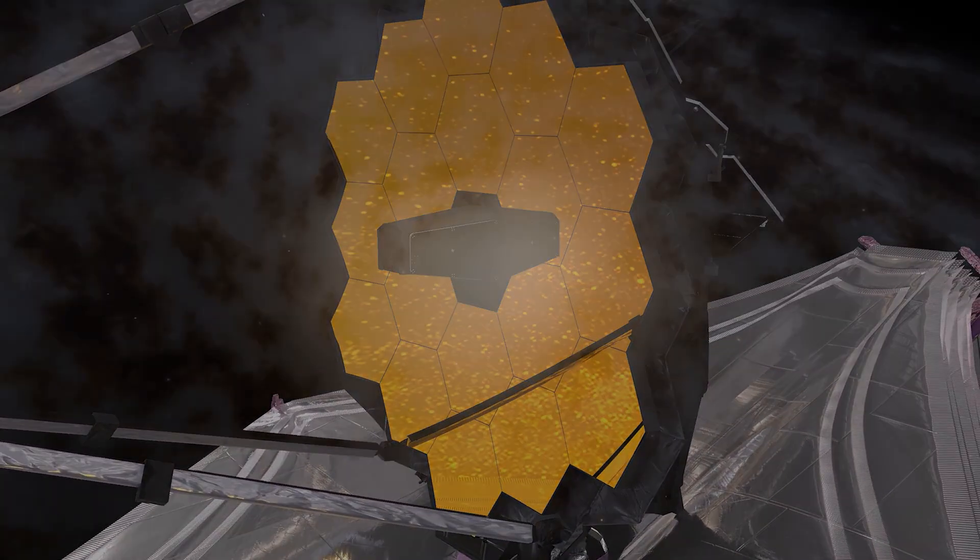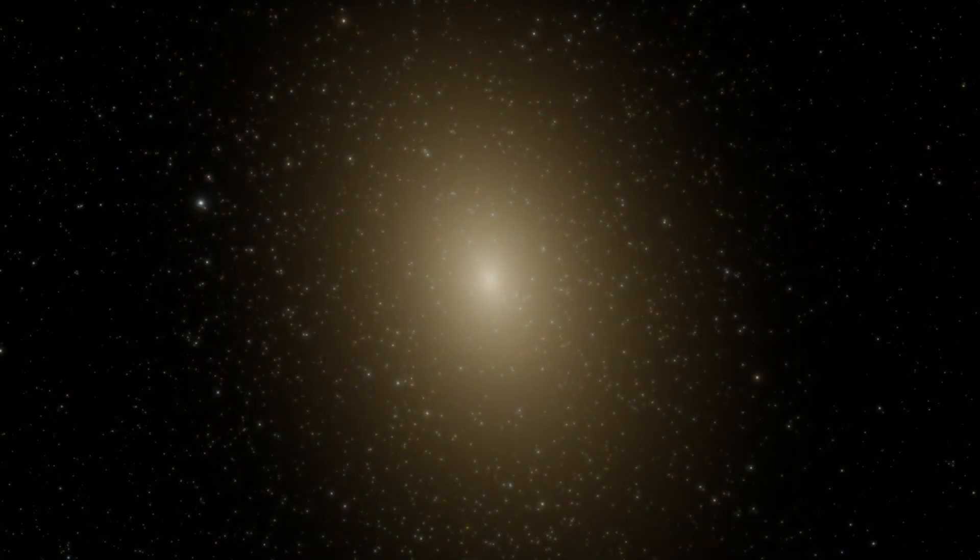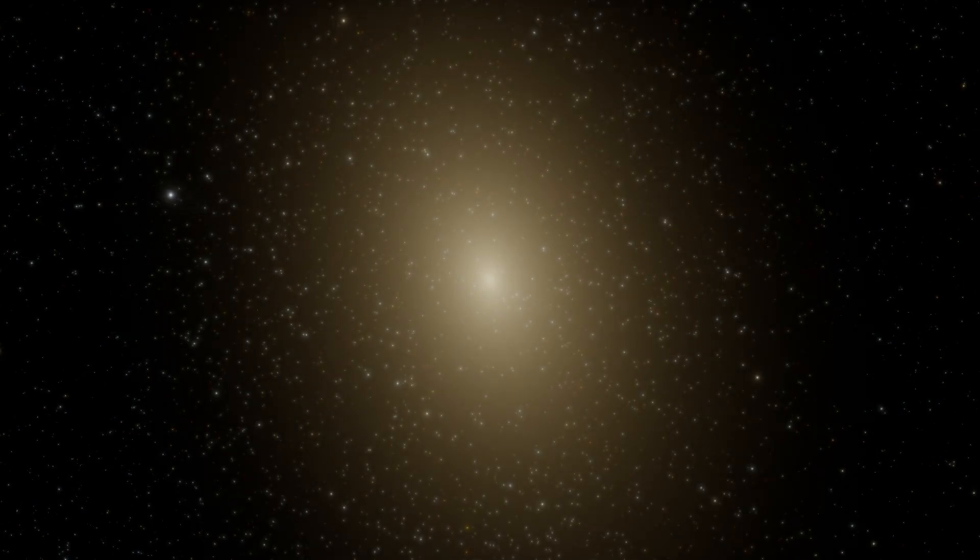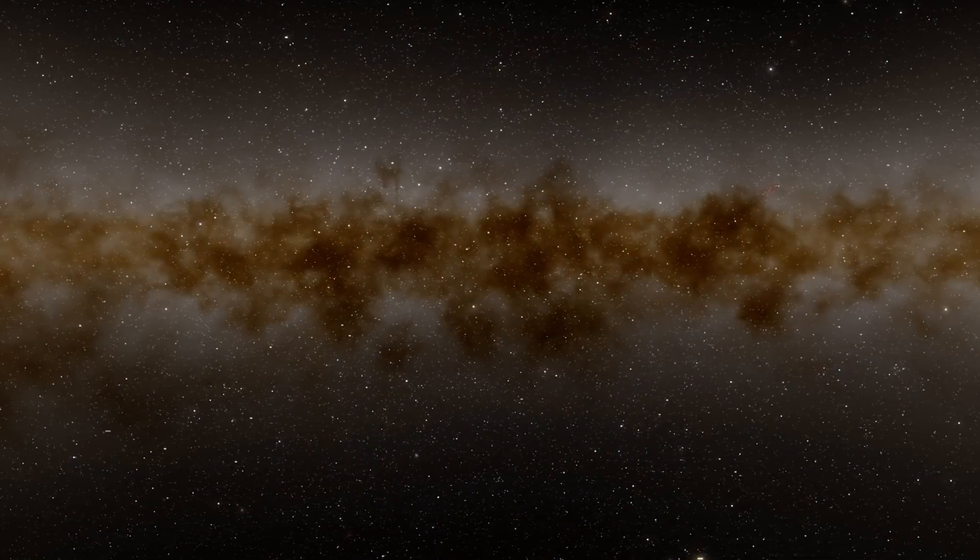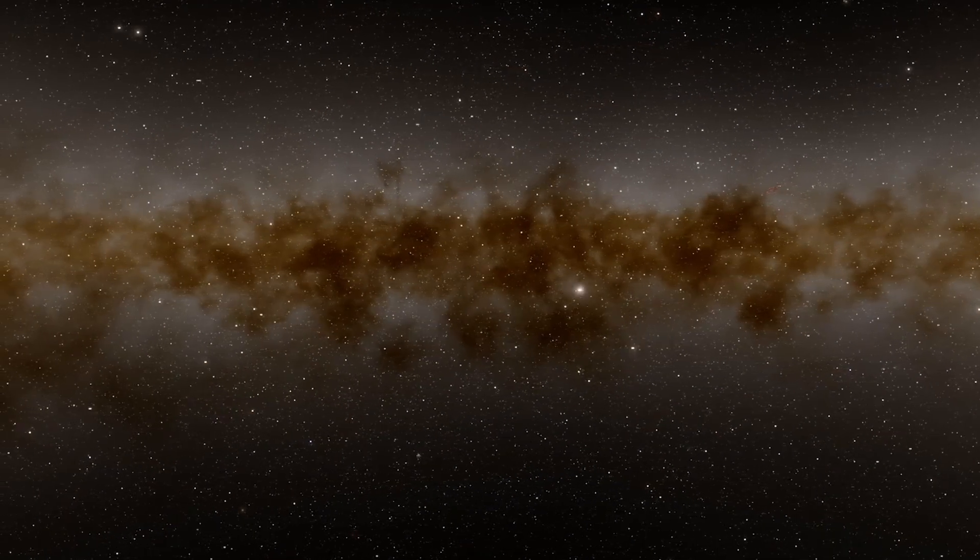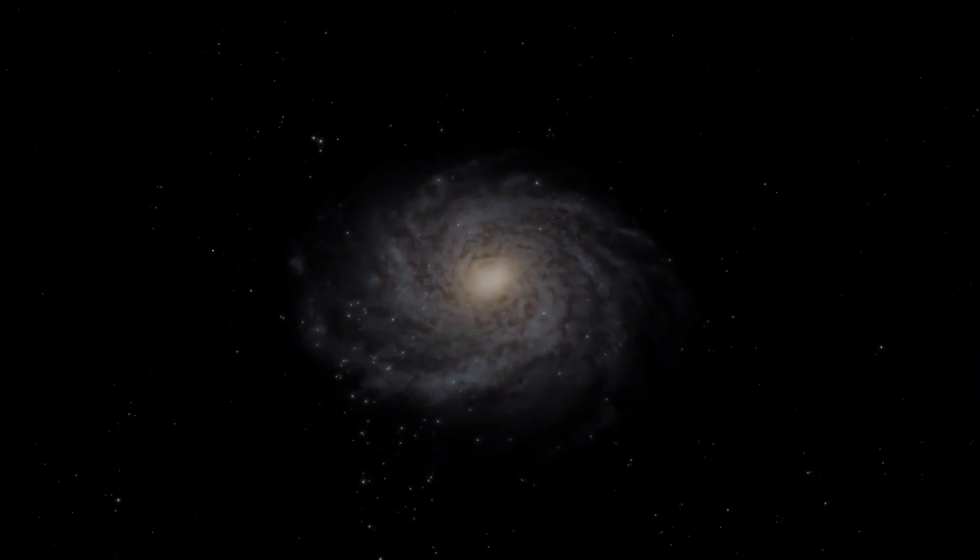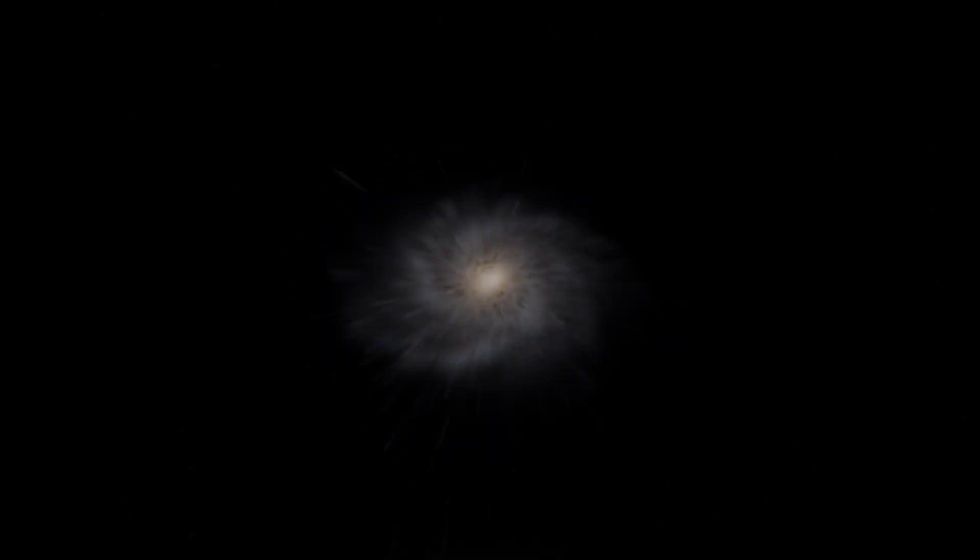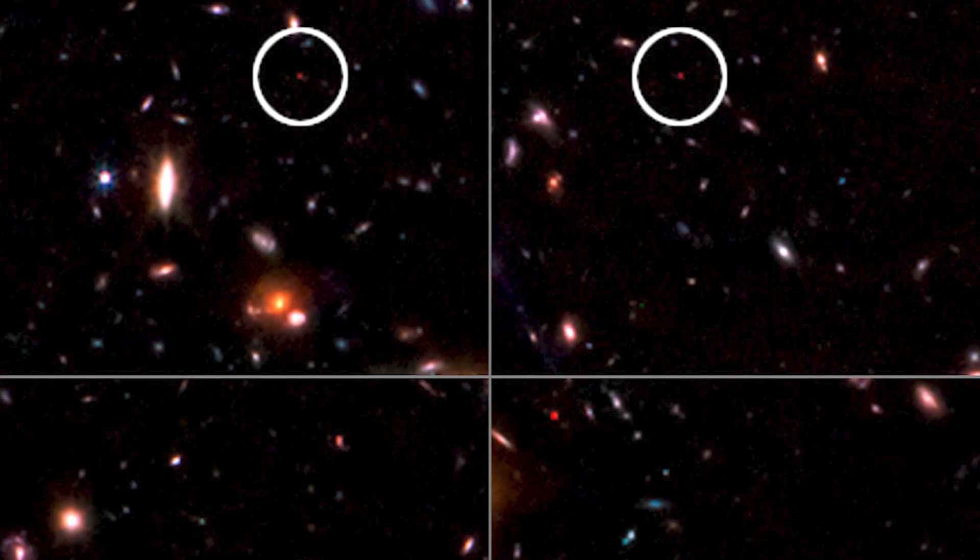Using redshift, the scientists calculated that the light from these objects took more than 13 billion years to reach our eyes on Earth. Consequently, we are dealing with structures that have already existed between 500 and 700 million years after the alleged Big Bang. By analyzing the characteristics of these structures, it was concluded that the Webb telescope had captured six extremely early galaxies in the image.